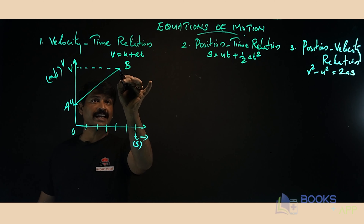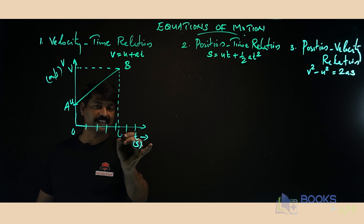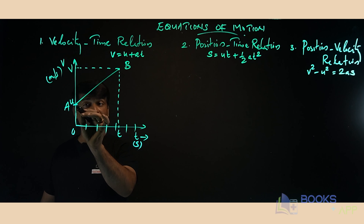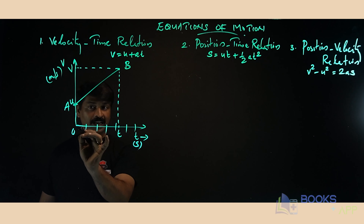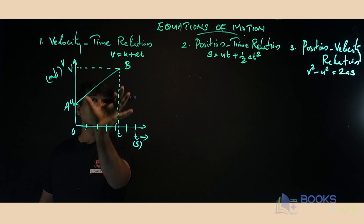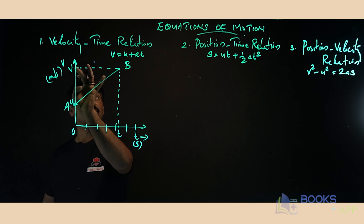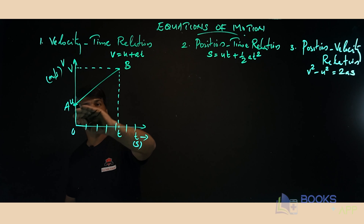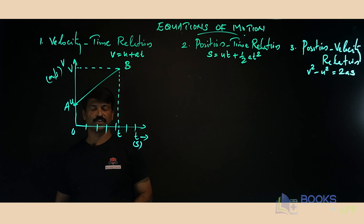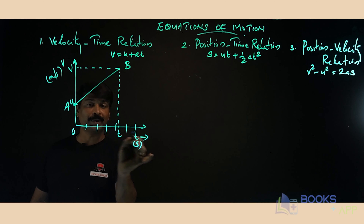The time taken by the object to change its velocity from u to v is represented on the x-axis. We say the time taken is t seconds. So the initial velocity is u meters per second, and after time t the object reaches point B with final velocity v meters per second, moving with uniform acceleration.